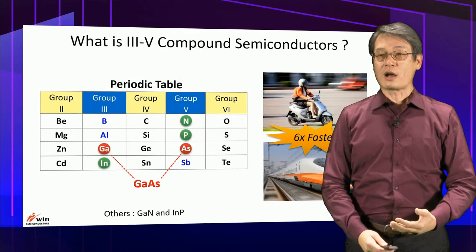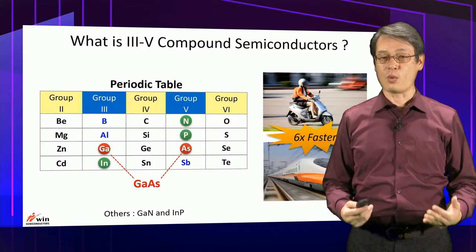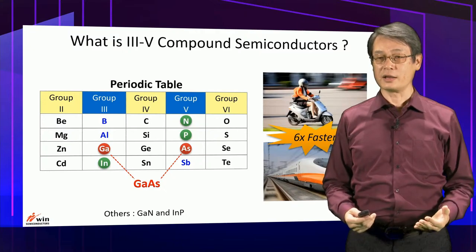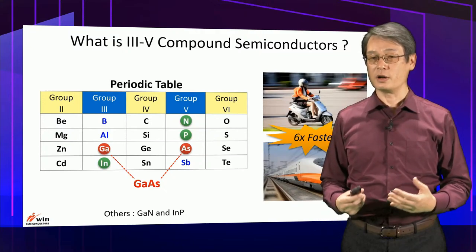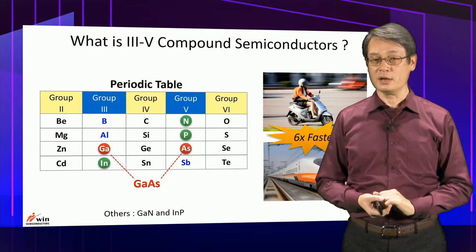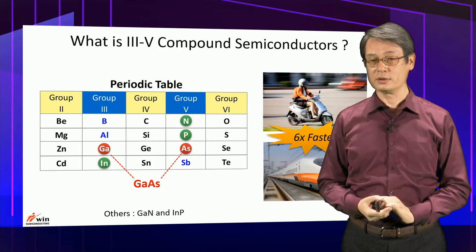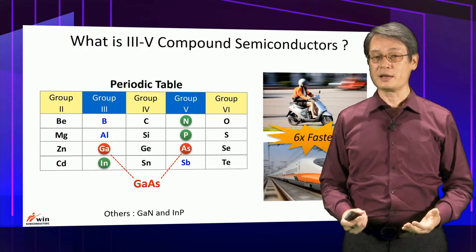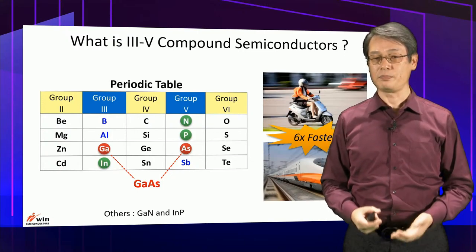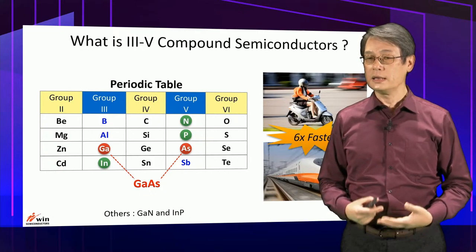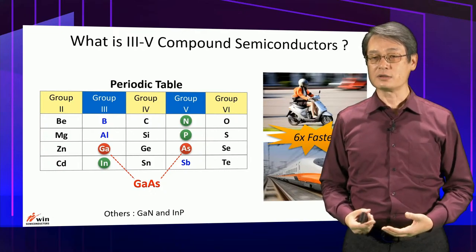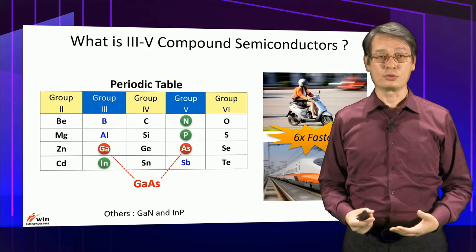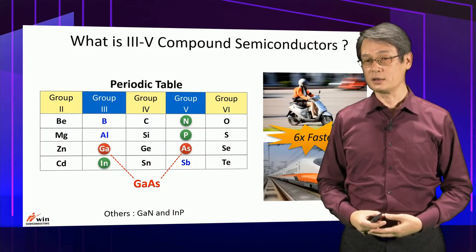3-5 compound semiconductors consist of at least one element from group 3 in the periodic table and one element from group 5. They chemically react with each other, forming a compound. Gallium arsenide is the most representative compound semiconductor. Gallium nitride is another, and indium phosphide is another. These are the three basic compound semiconductor materials.